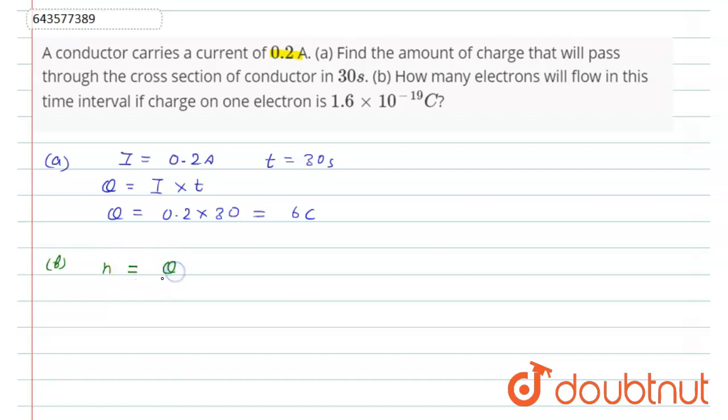...equals to total charge upon charge of one electron. So total charge is 6 coulomb and charge of one electron is 1.6 × 10^-19. By solving this, what we get is 3.75 × 10^19.